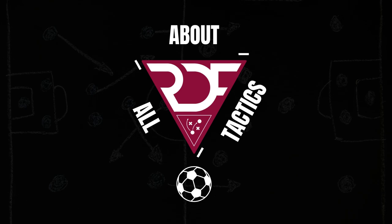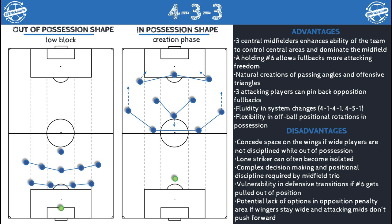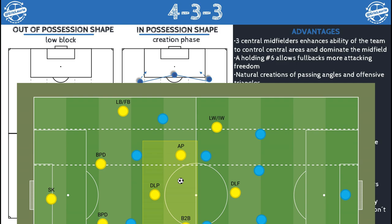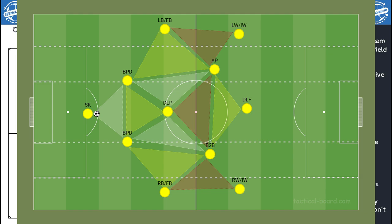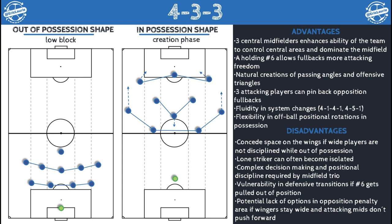Looking at an image created by Eric Laurie — which you can find on Twitter — for the advantages of the 4-3-3, which is the shape we are using: free central midfielders enhance the team's ability to control central areas and dominate midfield. A holding number 6 allows full backs more attacking freedom. There are natural creations of passing angles and offensive triangles. Free attacking players can pin back the opposition's full backs. It allows us to be fluid in system changes — we can change to a 4-1-4-1 or a 4-5-1 — and there's flexibility in off-ball positional rotations in possession.